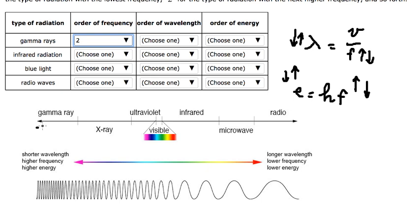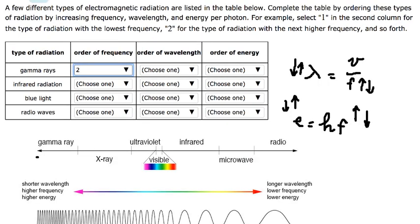In this case, gamma rays have the highest frequency, so we put number 4 for the highest one. The next one is the blue light, which is number 3. Then we have number 2, and radio waves are number 1. Frequency will have the same order as energy.